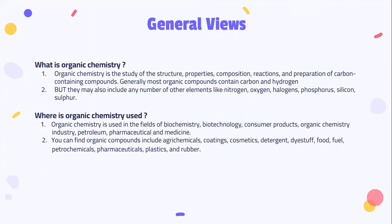Organic chemistry is the study of the structure, properties, composition, reactions, and preparation of carbon-containing compounds. Most organic compounds contain carbon and hydrogen but may also include nitrogen, oxygen, halogens, phosphorus, silicon, and sulfur. Organic chemistry is used in fields such as biochemistry, biotechnology, consumer products, petroleum, pharmaceuticals, and medicine. Organic compounds are found in agrochemicals, proteins, cosmetics, detergents, food, fuel, petrochemicals, plastics, and rubber.